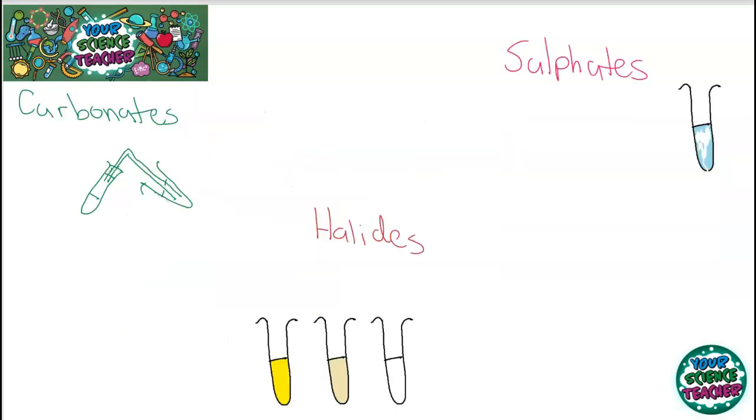There are three common negative ions to look out for that we might have present in compounds that we're going to test for. And those three are carbonates, halides, and sulfates. To test whether a carbonate is present, what you do is you add hydrochloric acid to your metal carbonate. And what happens is you should see fizzing. And the reason why you see fizzing is because carbon dioxide is being released. And that can be tested with lime water.